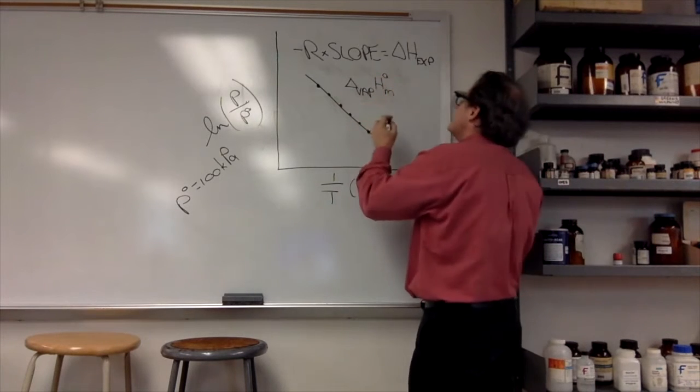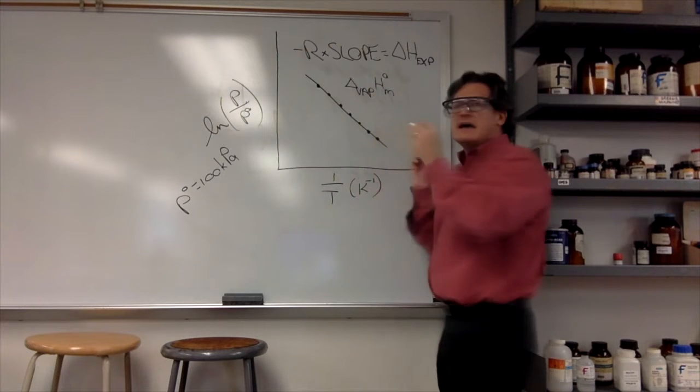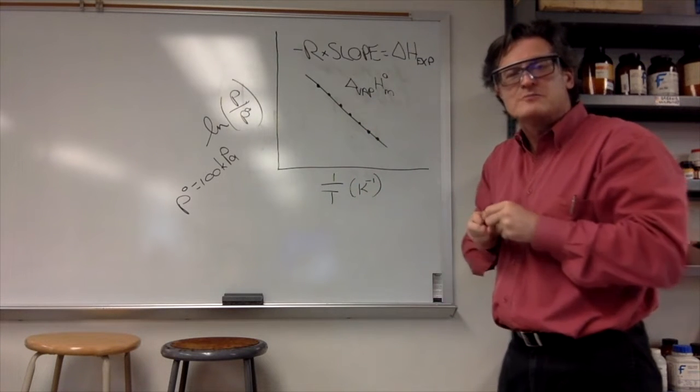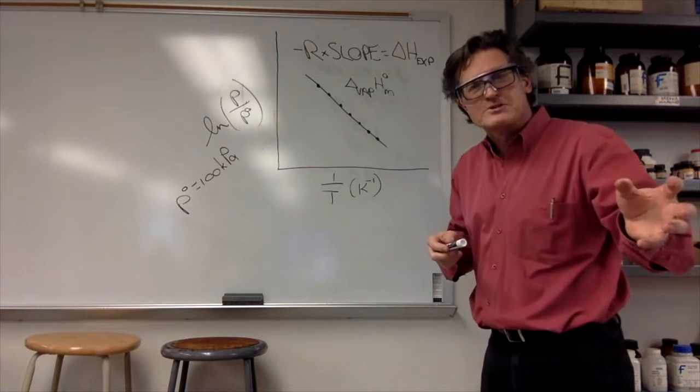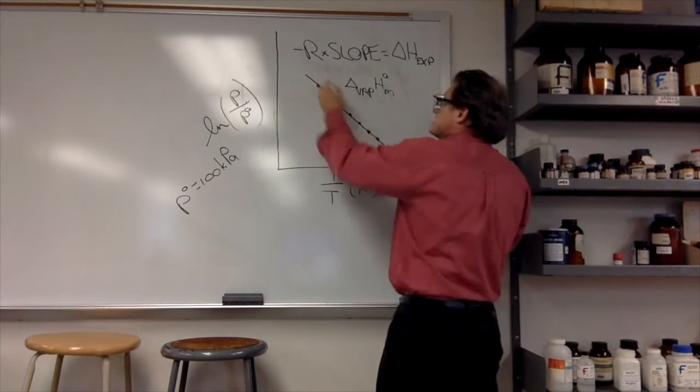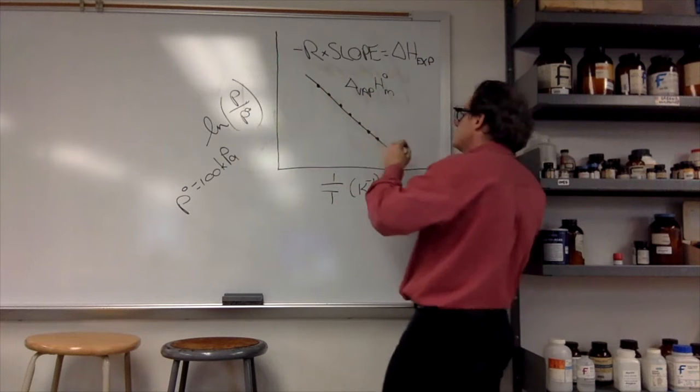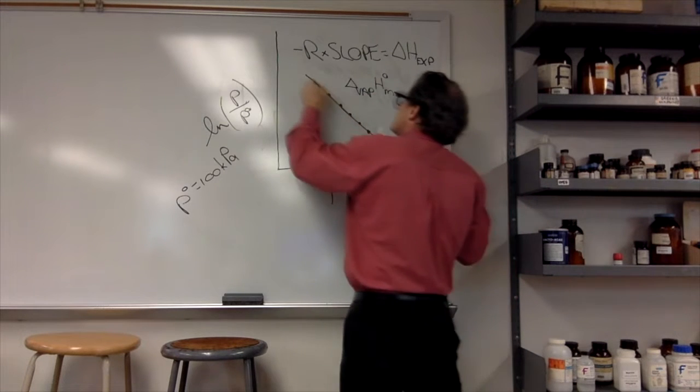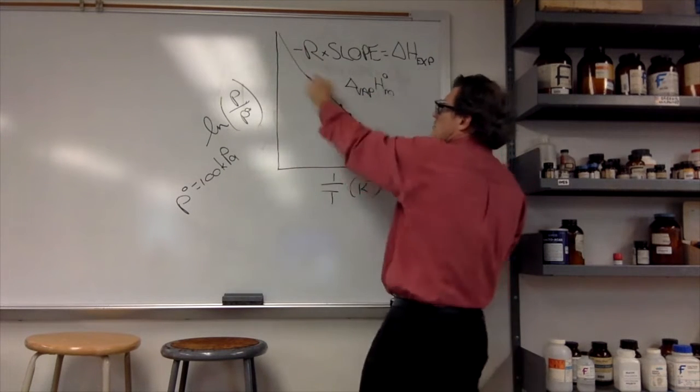Well, one reason is we know now that the enthalpy—the change ΔH—is a function of temperature. Yes, it's linear over a small range, but actually there's a larger curve here that really does change the shape a little bit.